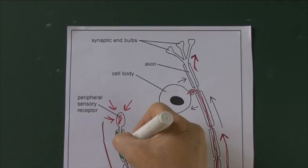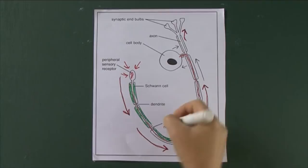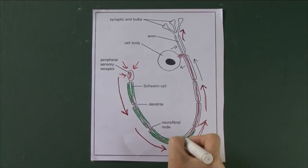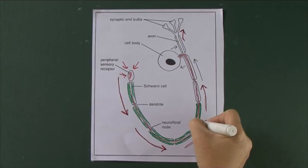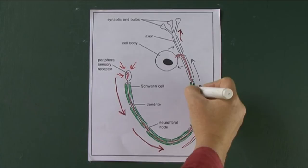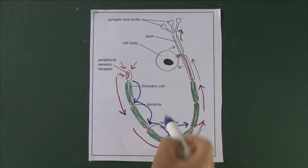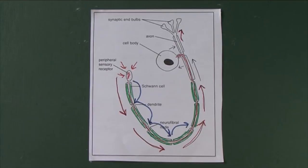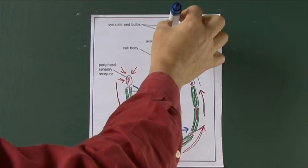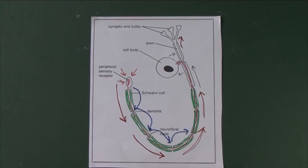This is also a myelinated nerve fiber with Schwann cells. Nerve cells in the central nervous system also have myelin sheaths, but in that case the myelin is made from cells called oligodendrocytes, whereas in the peripheral nervous system it's the Schwann cells. There is again rapid saltatory transmission, taking the nerve impulse very quickly from the periphery into the spinal cord, from where it connects with other neurons ascending to the brain.